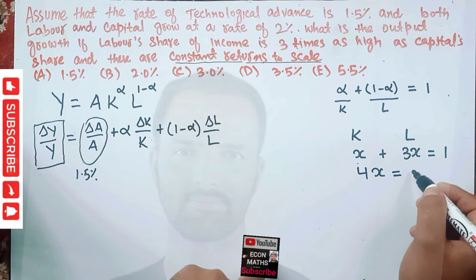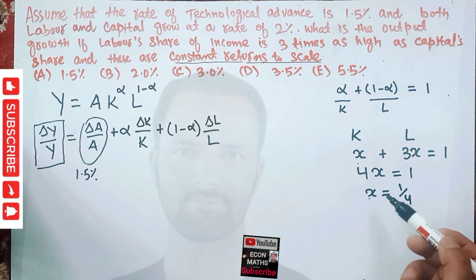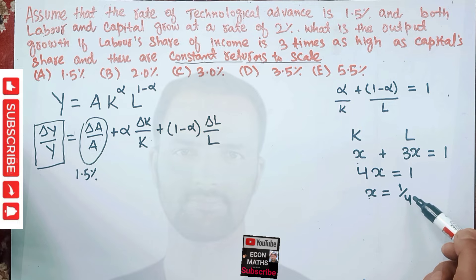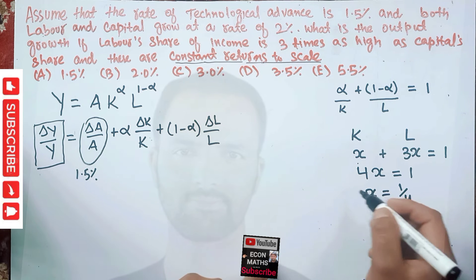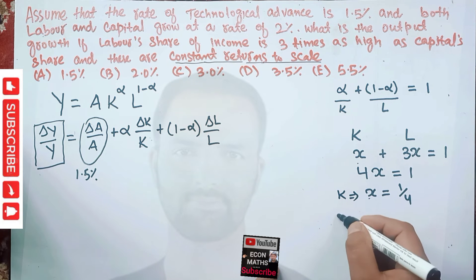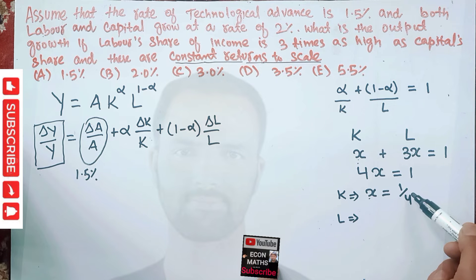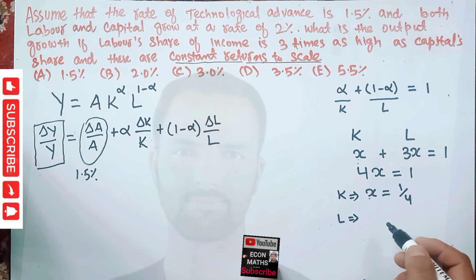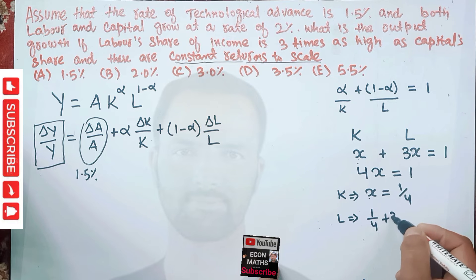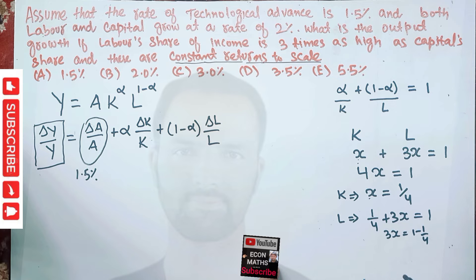If we add them: x plus 3x equals 4x, which should equal 1. So x equals 1/4. This x is the capital share of income, so alpha equals 1/4. The labor share (1 minus alpha) is then 3x, which equals 3 times 1/4, giving us 3/4.